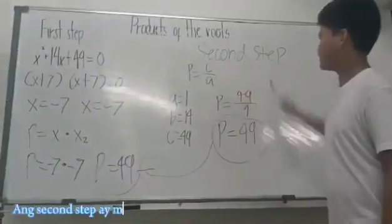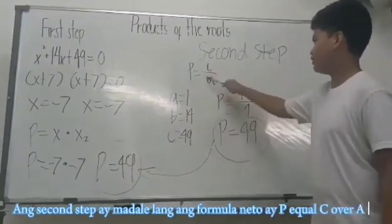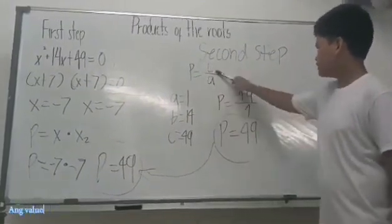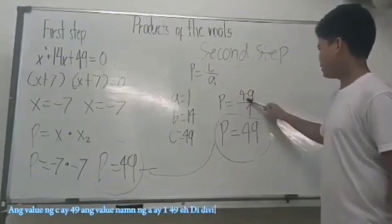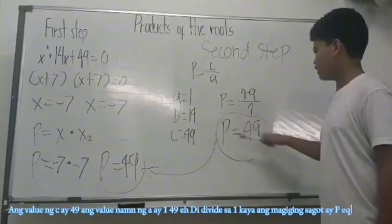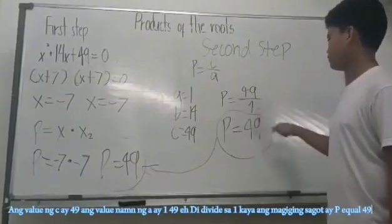The second step is easy. The formula is C over A. The value of C is 49, the value of A is 1. 49 divided by 1, the value is 49. So the product of the roots is 49.